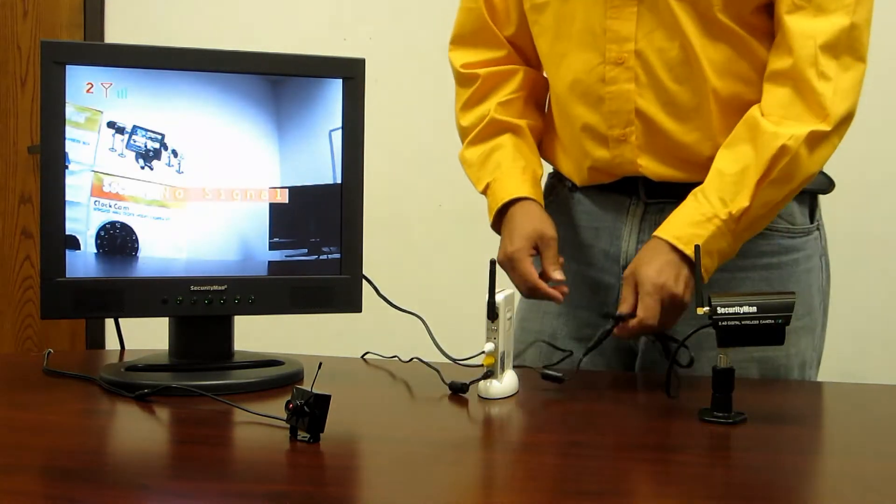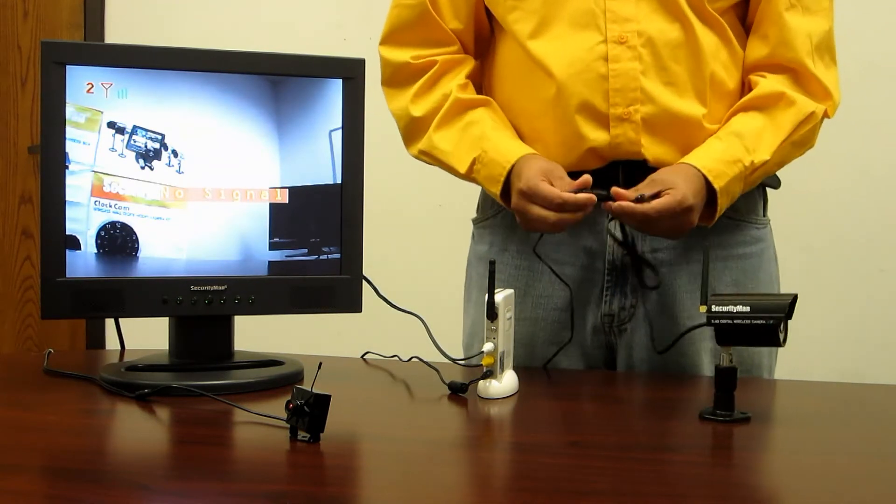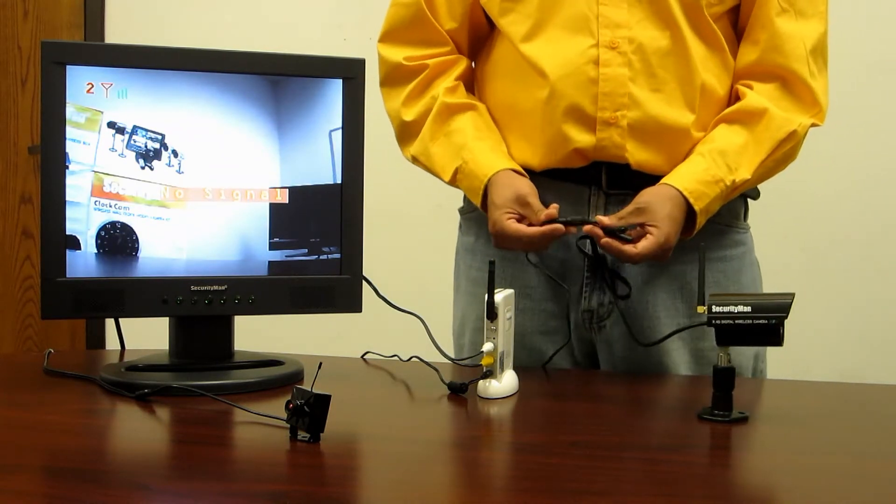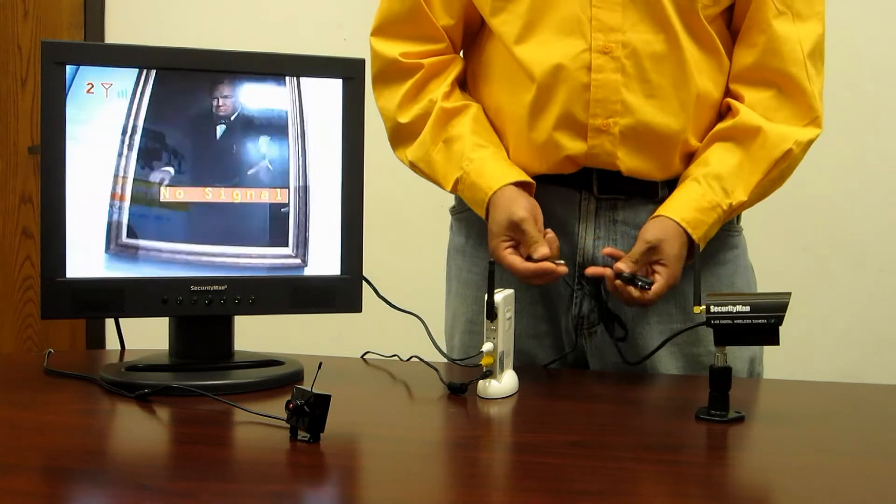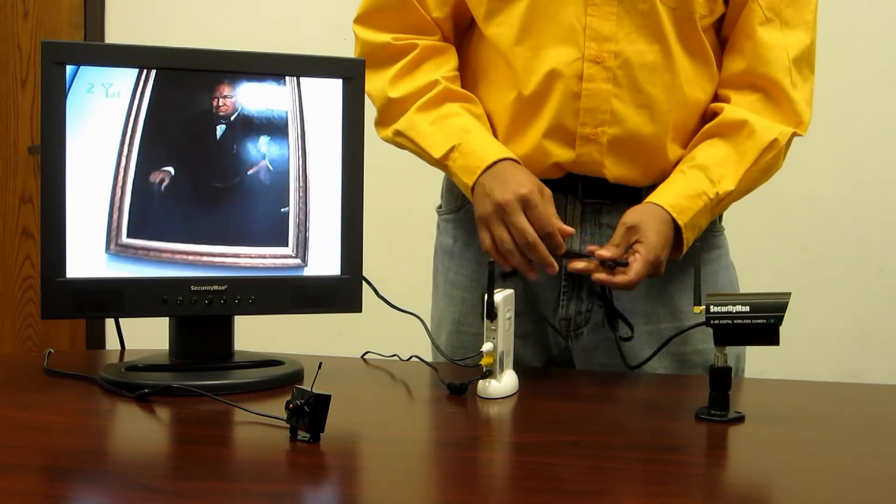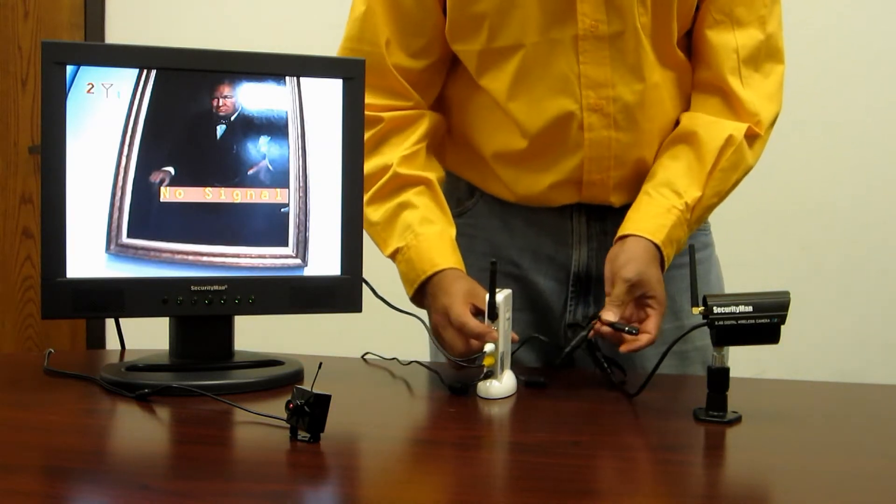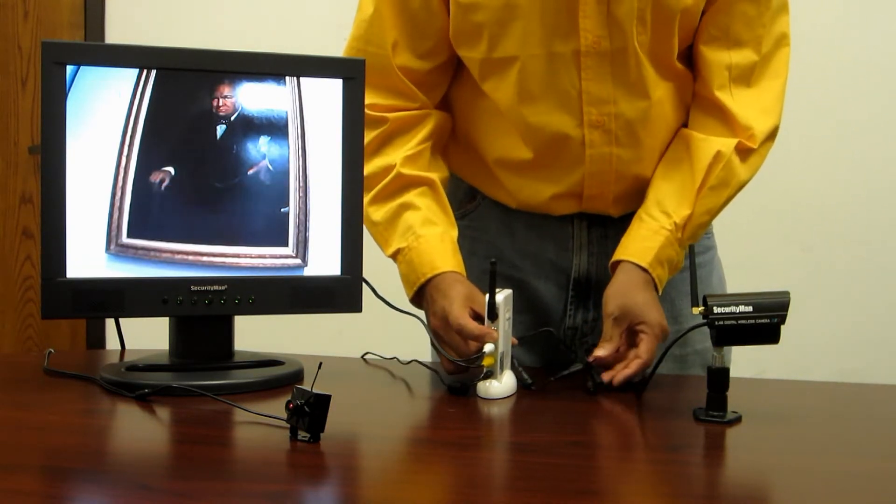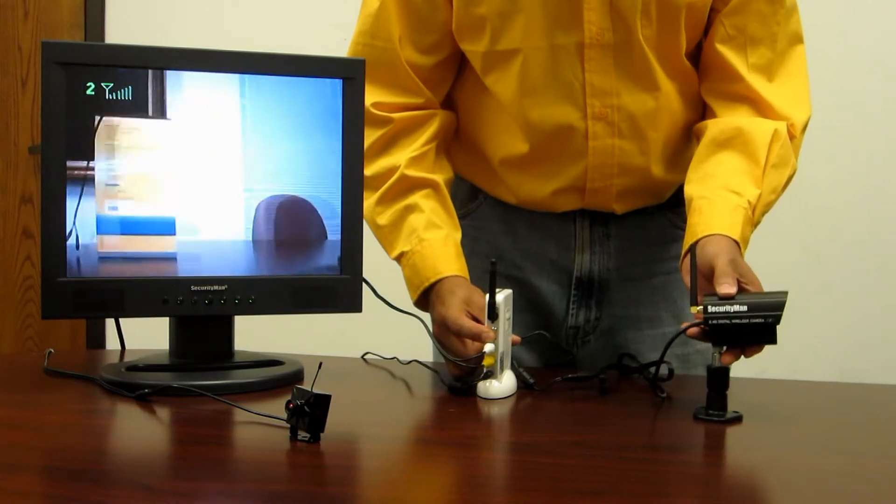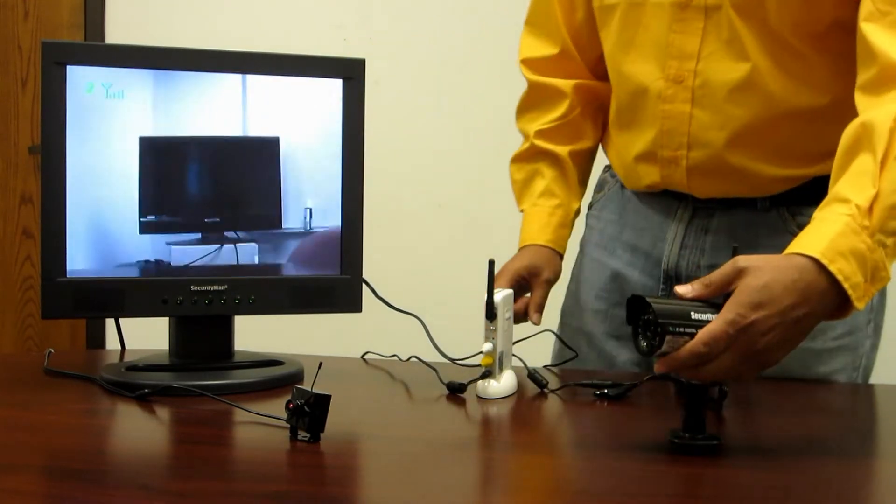Now all you got to do is power up your add-on camera. Plug it into the power supply, press the pairing button and the pairing button located at the receiver. And you should now get the camera image from your camera.